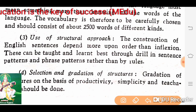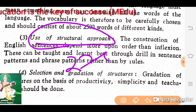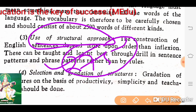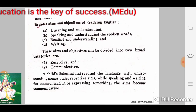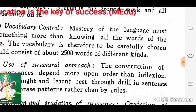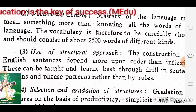Then, use of structural efforts. There are 275 basic structures in English, and we have to learn all structures carefully to improve our English knowledge. The construction of the English sentence depends more upon order than inflection, and this can be taught and learned through drill in sentence patterns and phrase patterns rather than rules.